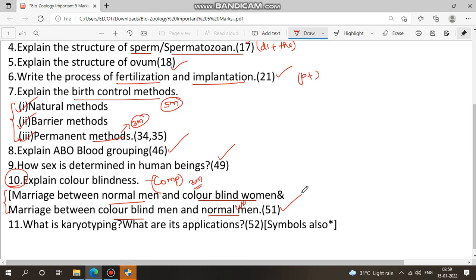Check page 51. Next 11th question: what is karyotyping? What are its applications? So this one is a 3-mark question, plus this one is pedigree symbols: male symbol, female symbol, family, child. So this one has 6 symbols.